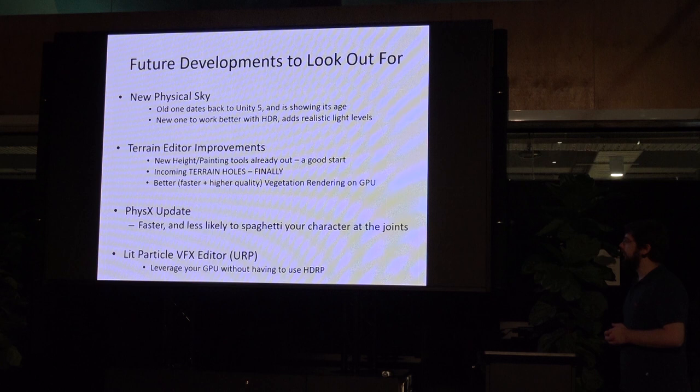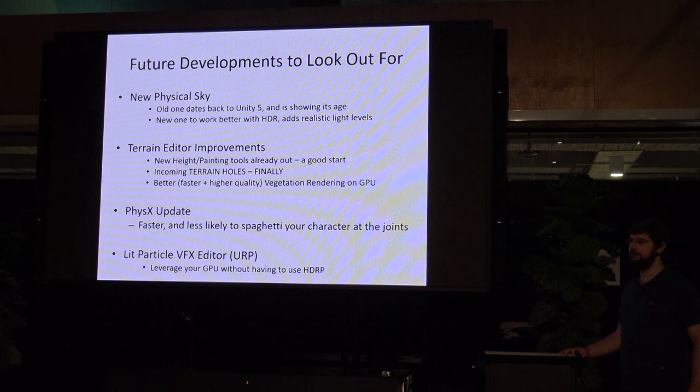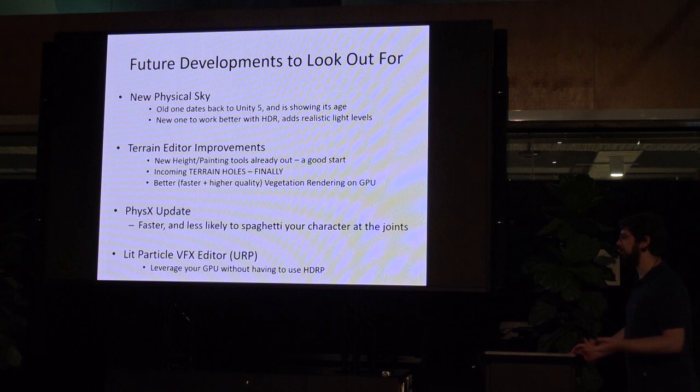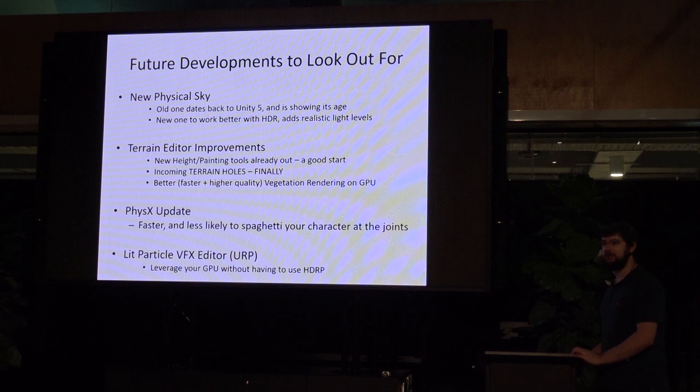There are quite a few future developments to look out for. The procedural sky that defaults with Unity came back in version 5 and apparently nobody at Unity knows who built it or when — so they've started to design a replacement. It's going into HDRP first and probably Universal Render Pipeline not long after, playing a lot better with HDR and tone mapping — proper physical values for the sun, so everything looks nicer and more reliable.